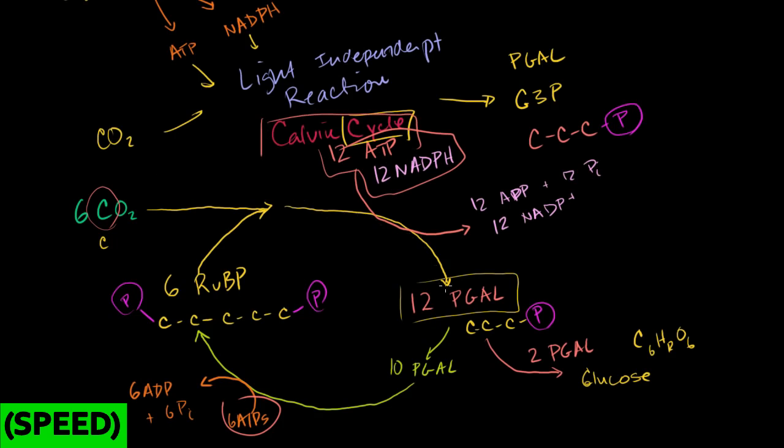And of course it's called a cycle, because we generate these PGALs. Some of them can be used to actually produce glucose or other carbohydrates, while most of them continue on to be recycled into ribulose biphosphate, which once again reacts with carbon dioxide, and then you get the cycle happening over and over again.